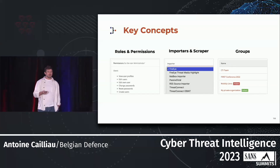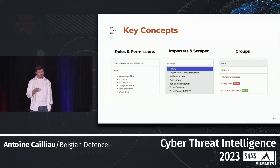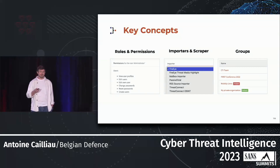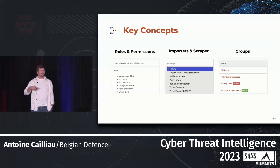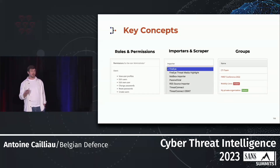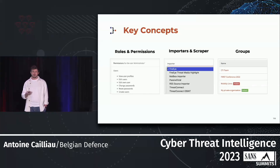We have roles and permissions that allow you to control precisely what a user can and cannot do. It's very fine-grained because in larger teams you often have well-defined roles that are important to keep. We have a layer of automation using importers and scrapers that gather information and populate the database for you. And we have groups that help you control who can see the information — you can release a document to a specific group, ensuring nobody outside the group can see it.